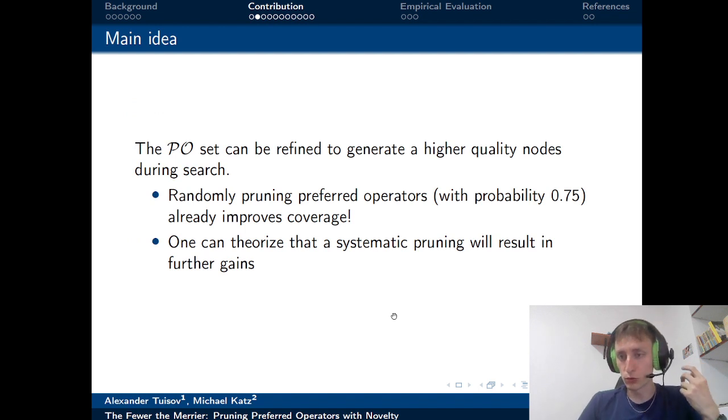What we wanted to do is refine the preferred operators set using novelty. The main idea is that the preferred operators set is flawed. It contains too many operators that are not usable. How do we know this? First, we ran some random pruning of preferred operators. We threw them out with some relatively high probability, 0.75, and this alone already improved coverage. This is why we believe that preferred operators sets as defined before this work were containing too many operators that were not useful. And we thought that if random pruning gives us some results, maybe systematic pruning with some logic behind it could give us even more gains.